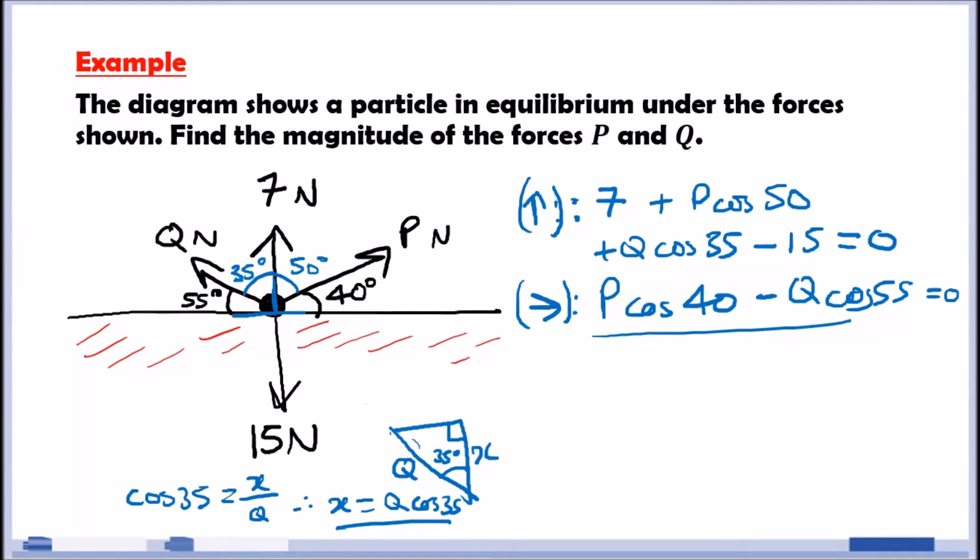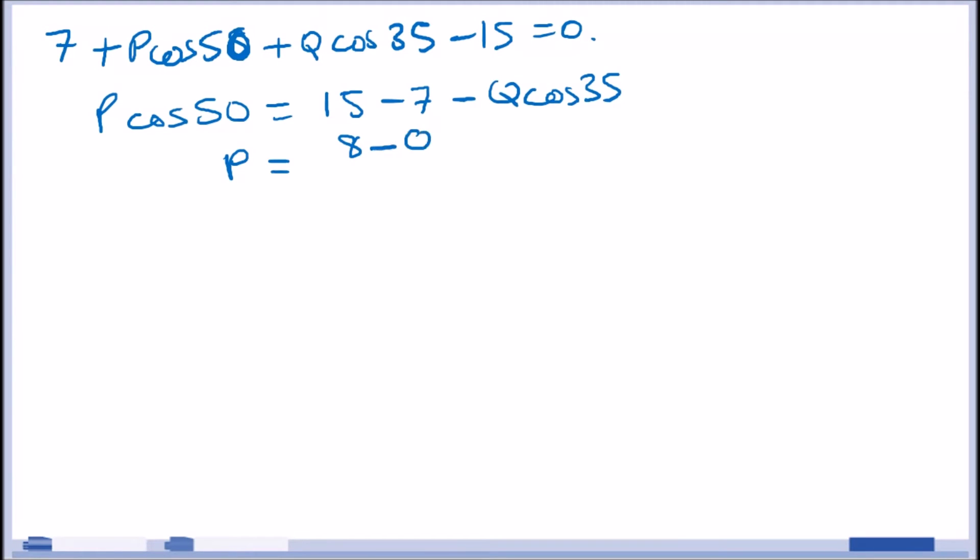I'll quickly copy this out. Here we have the first equation. 7 plus P cos 55 plus Q cos 35. Is that right? Oops. P cos 50 minus 15 equals 0. Let's make P the subject. You want plus 15 minus 7. So, P cos 50 equals 15 minus 7 minus Q cos 35. And then, divide by cos 50. So, P equals, taking this, 15 take away 7 equals 8 minus Q cos 35 over cos 50.